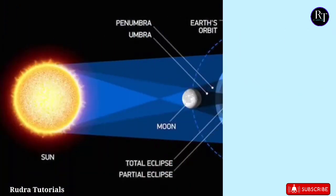Whenever the Moon is in the middle, the shadow of the Moon falls on some portion of the Earth. That portion becomes dark, and this is called a solar eclipse.